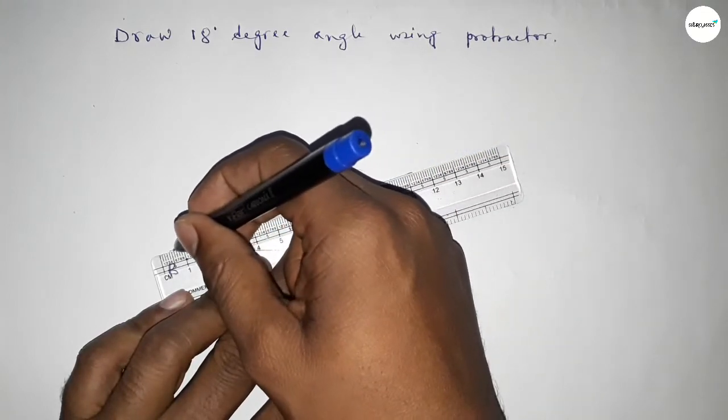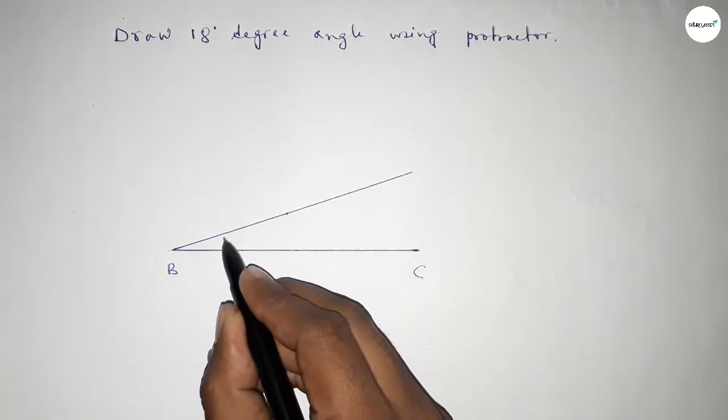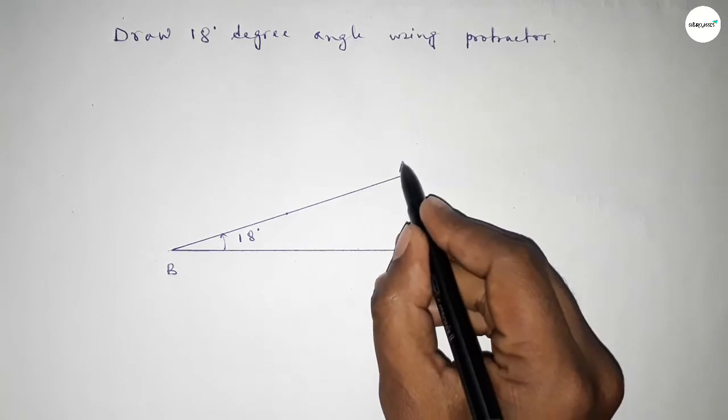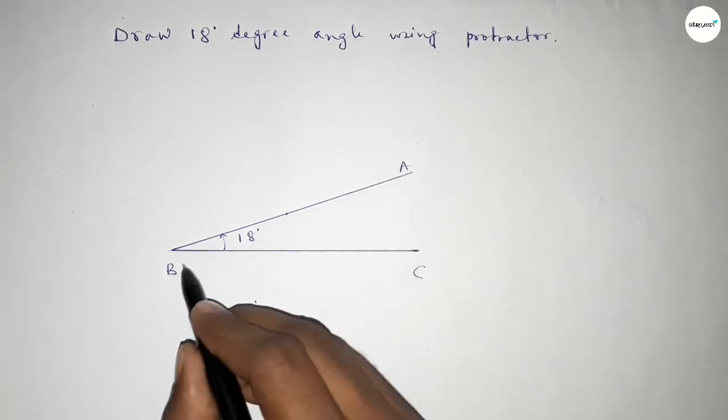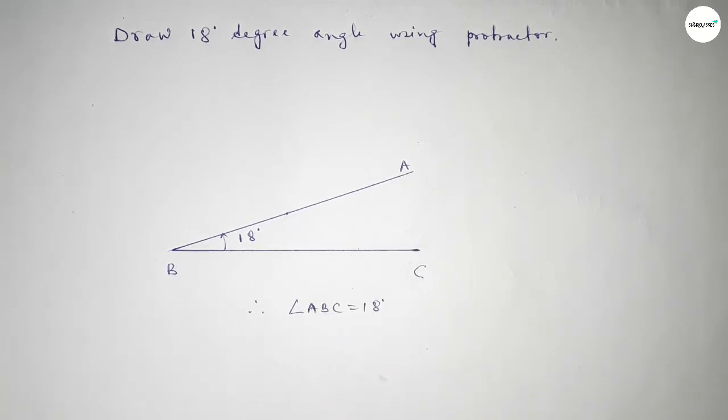To get 18-degree angle, and taking here a point. So this is 18 degrees, and taking here point A. So angle ABC, after this angle ABC equals 18 degrees. That's all, thanks for watching.